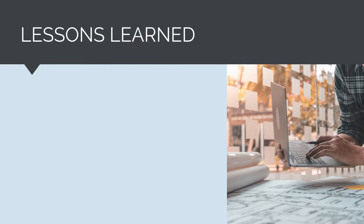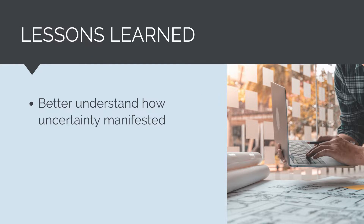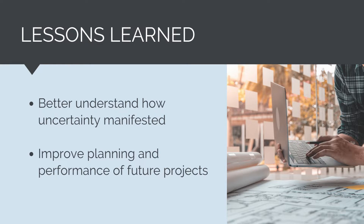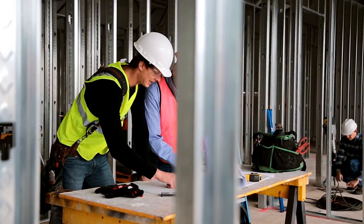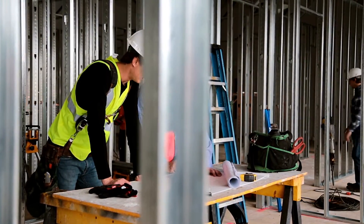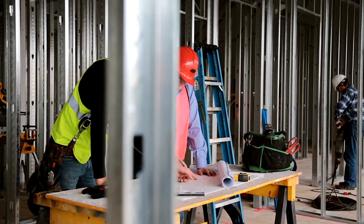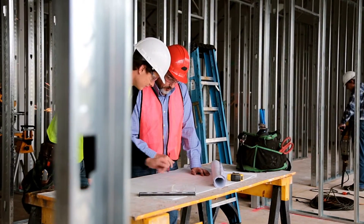Finally, the risk management process allows us to better understand how uncertainty impacts project objectives. When we close out the project, we'll better understand what happened and why. The historical data can then be fed into our next project to better improve performance. We can understand how technical risks resulted in schedule delays. On our next project, we know the true causes and can fix these to ensure the same things don't happen time and time again. Proper risk management puts us on the front foot and increases the chances of achieving project success. We can avoid harming people or the environment and deliver the project scope in line with our budget and schedule.